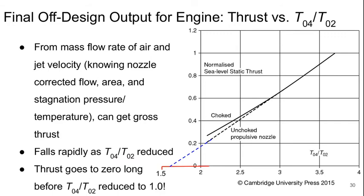The final off-design output for the engine that we care about is of course the thrust. We would like to plot thrust versus T0.4 over T0.2. Once we know the mass flow rate of air and the jet velocity — and knowing the nozzle corrected flow, nozzle area, and the stagnation pressure and temperature at the nozzle exit — we can get the gross thrust. This is normalized to 1 at the design point, where T0.4 over T0.2 is 3.7.